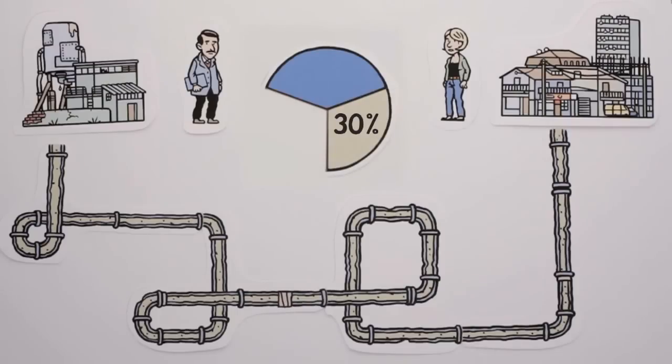Approximately 30% of the water is lost to the ground through leaking or broken pipes.